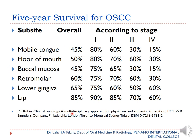Looking at five-year survival rates: for mobile tongue cancer diagnosed at Stage 4, only 15% of patients survive at five years, whereas if diagnosed at Stage 1, 80% can survive. Floor of the mouth shows approximately 30% survival, buccal mucosa 15%, retromolar 30%, while gingiva and lip have better prognosis. This emphasizes that oral cancer has poor overall five-year survival rates and early diagnosis significantly improves prognosis.